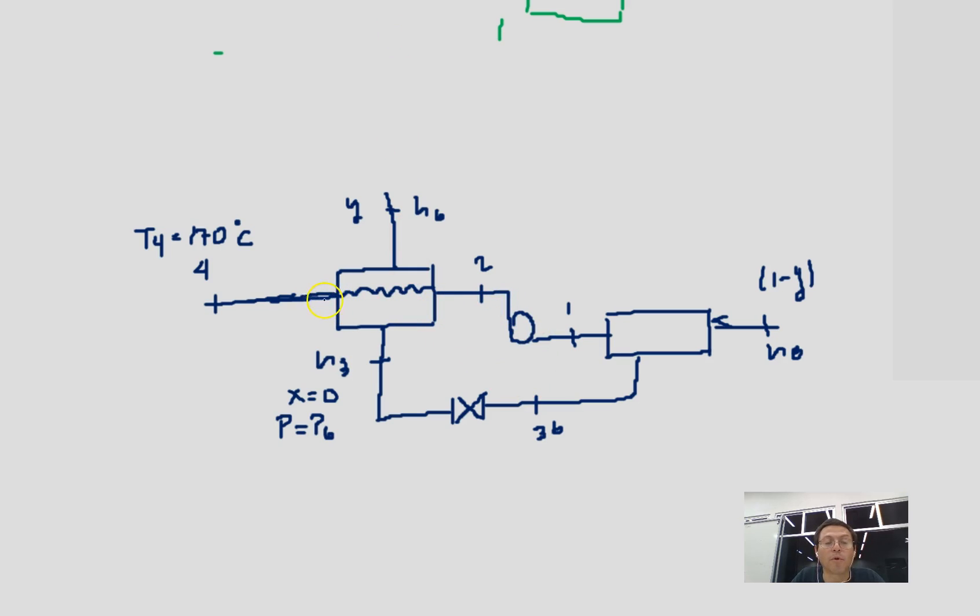In the problem it says that the exit of the closed feedwater heater temperature is that of the saturation temperature of the extraction vapor. Since at 0.8 MPa the saturation temperature is 170 degrees, we're going to use 170.